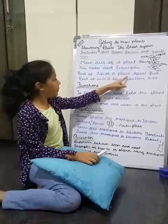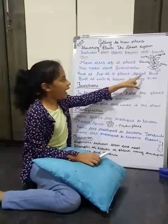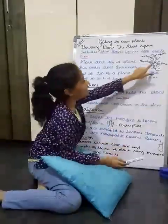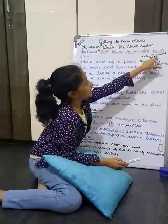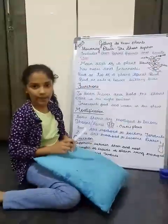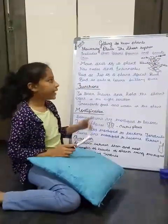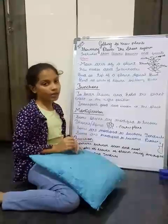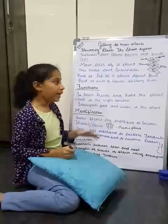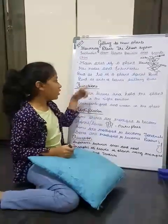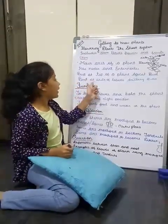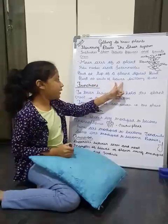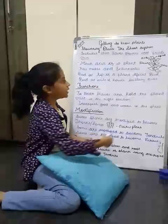The bud at the tip of a plant is known as the apical bud. You can see it over here — there is a small point which is the apical bud, at the very tip of the plant or stem.